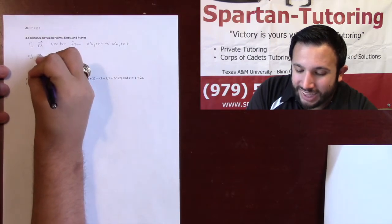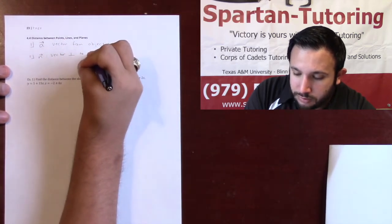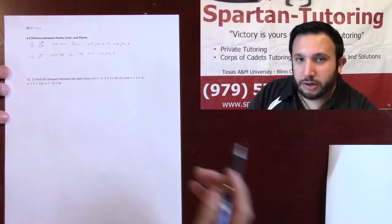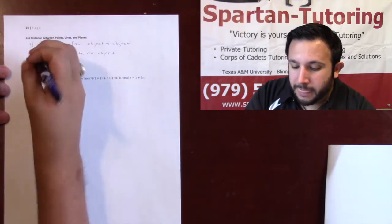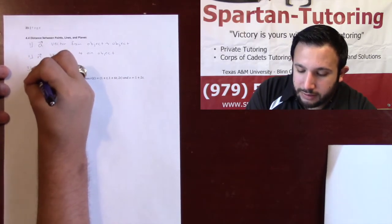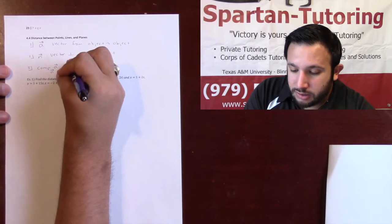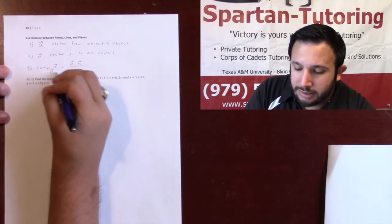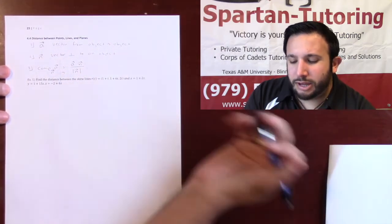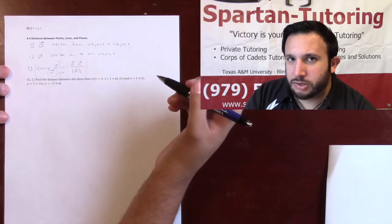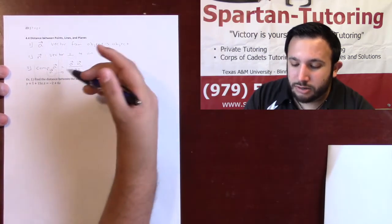The next thing you need to do is find a normal vector N — a vector that is perpendicular to one of the objects, whether that's perpendicular to a plane, perpendicular to a line, or so forth. Then the last thing you do is find the scalar projection of A onto N, which is A dotted with N divided by the magnitude of N. You need absolute values around this because the scalar projection can be negative — and you can't have a negative distance.